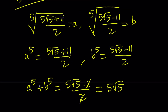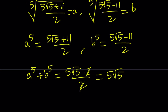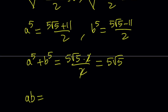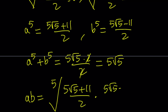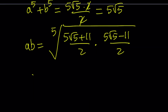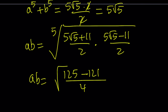The other idea is: since these expressions are kind of like x + y and x − y, they're in that form. So if you multiply them, we get something nice. a·b is going to be the fifth root of the product of these two expressions. We get a difference of two squares: (5√5)² = 125, minus 11² = 121, divided by 4. The fifth root of (125 − 121)/4 = fifth root of 1, which is 1.